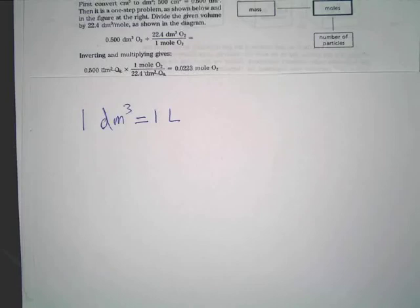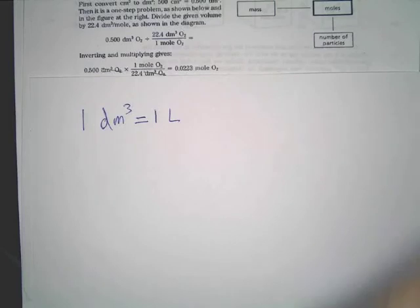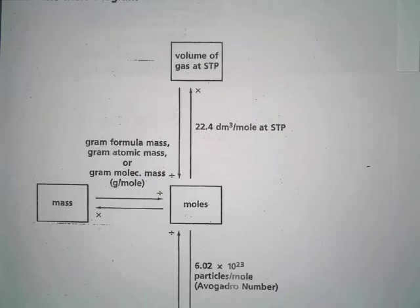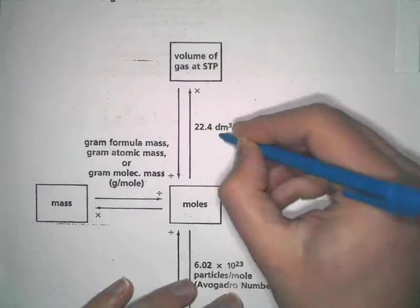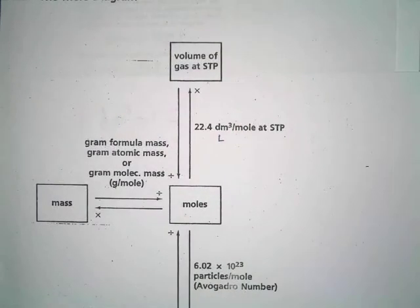One cubic decimeter is the same volume as one liter. They're both volume measurements. That really won't be a big factor here—on some problems you might be presented liters instead of decimeters, but understand, if you look at this chart, 22.4 cubic decimeters over a mole is the same thing as 22.4 liters, just so you know.